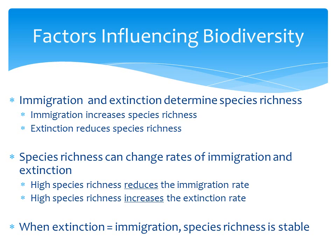Immigration and extinction are the two factors that determine species richness. Immigration increases species richness by bringing new species to the island. Extinction reduces species richness, obviously because those species are lost from the island. But in turn, species richness can also change the rates of immigration and extinction. High species richness can reduce the immigration rate, because a higher proportion of the total number of species present on the mainland are already on the island, so a new individual arriving is less likely to represent a new species. High species richness, on the other hand, increases the extinction rate, because you have more different species competing on the island for the same resources, so they're more likely to go extinct.